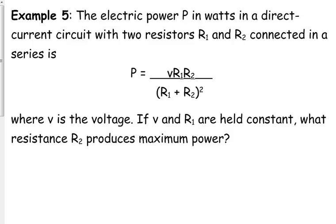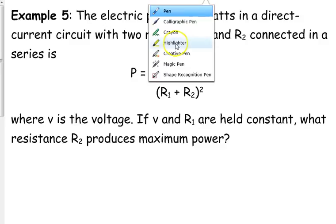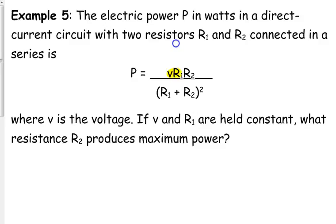Okay, so it says the electric power P in watts in a direct current circuit with two resistors, R sub 1 and R sub 2, connected in series is given by this formula. We have three variables. However, it tells us that V is the voltage, and it says the voltage and R1 are held constant.